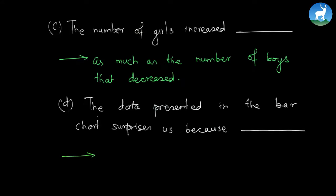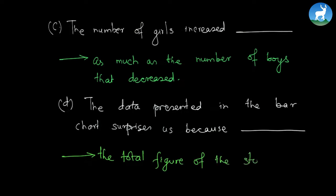This is the last reading comprehension question: the data presented in the bar chart surprises us because the number of boys decreased every year, or the number of girls increased every year, or the total figure of the students did not change. The first two options also seem correct but the right answer is the total figure did not change, because the total number of students is always constant at 1100.